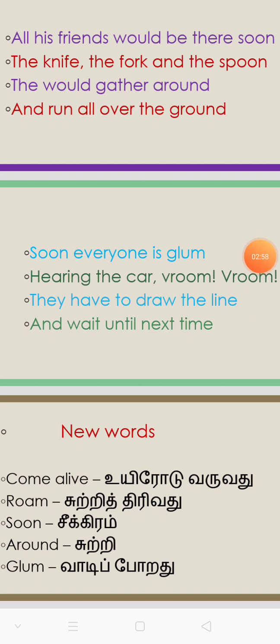Now I explain new words from this poem. இதிலுள்ள new words எடுத்து, உங்களுக்கு நாமுந்து விரிவான தமிழில் கொடுத்து திரிக்க. Come alive — அது உயிர் வருது. Roam — இங்கி யங்கி சுத்துது. Soon — சீக்கிரம் வருவது. Around — நம்ம சுத்தி இருக்கிறது. Glum — வாடி போறது. இதுதான் இந்த rhyme-ல் இருக்கிற new words.